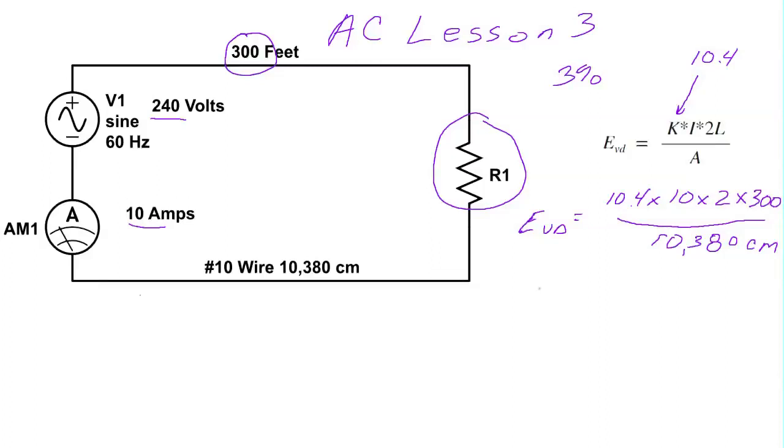So once we plug all these numbers in and do the math, we end up with a voltage drop of 6.01 volts. So 6 volts is how much we're dropping, so our load is going to see